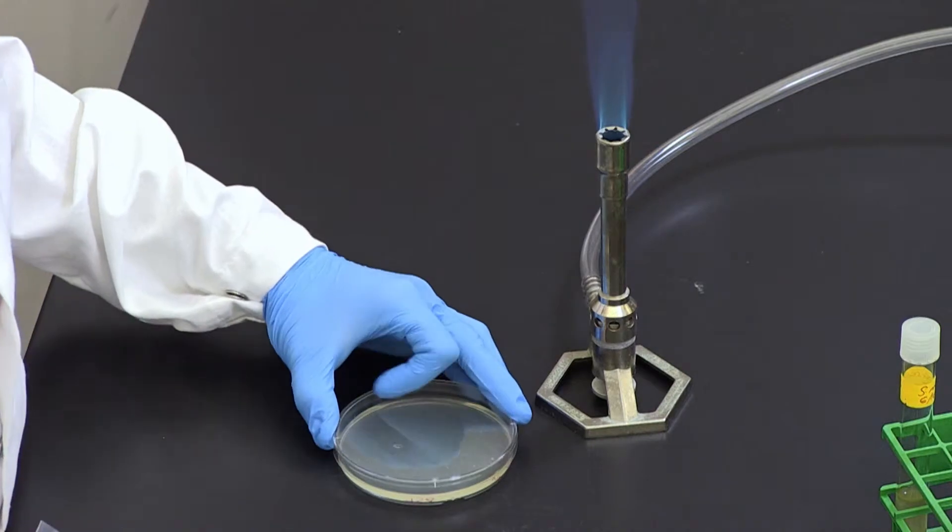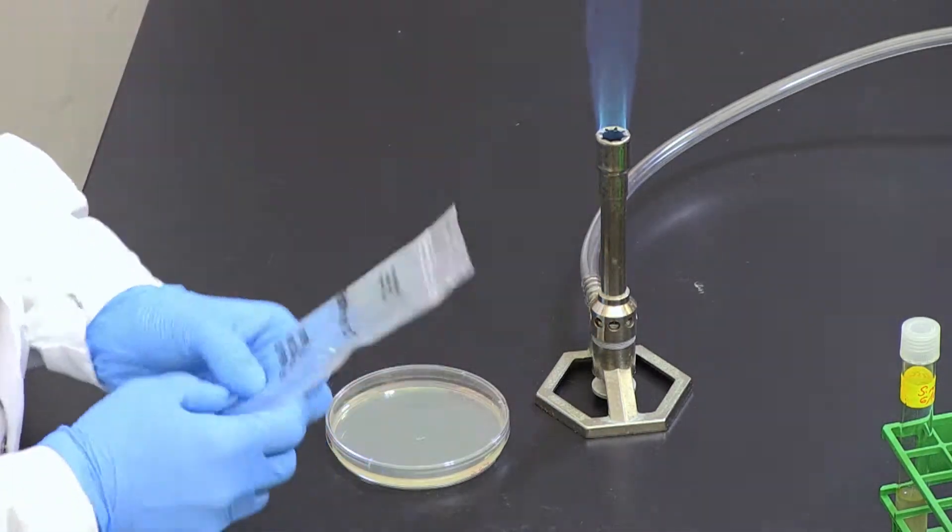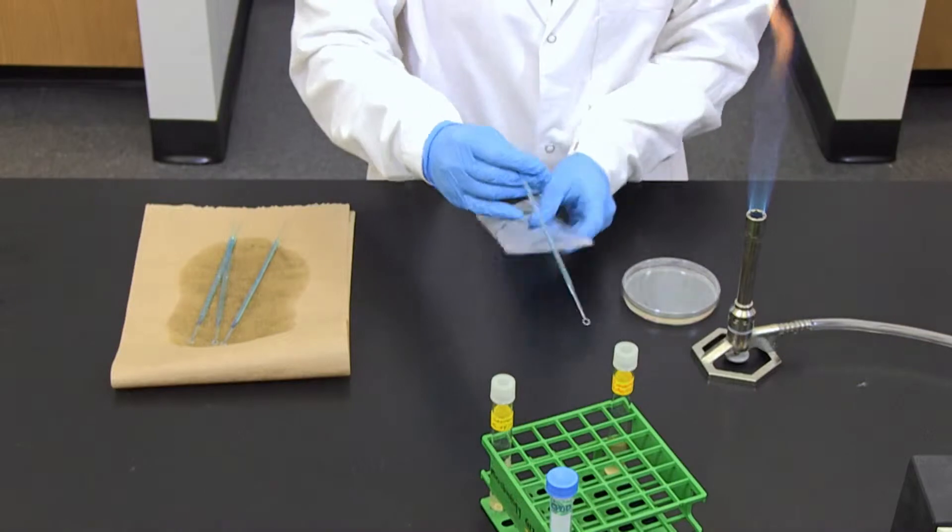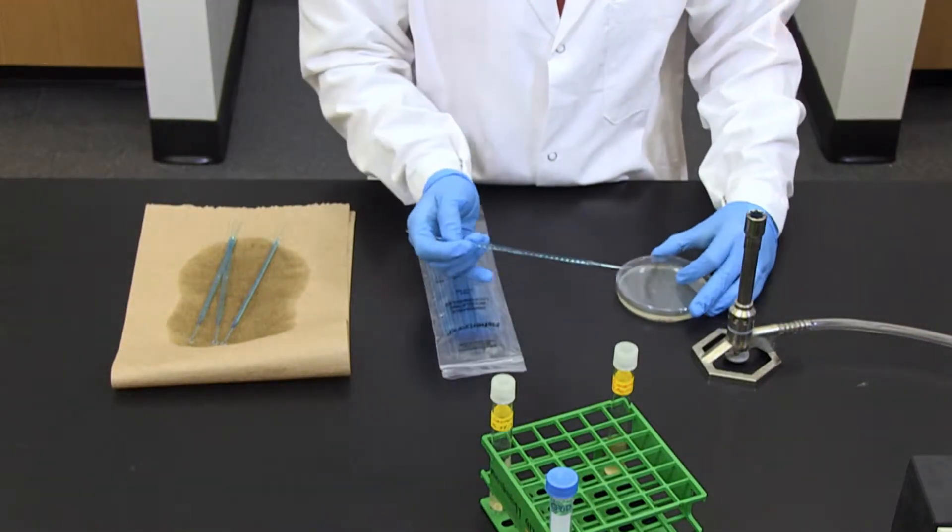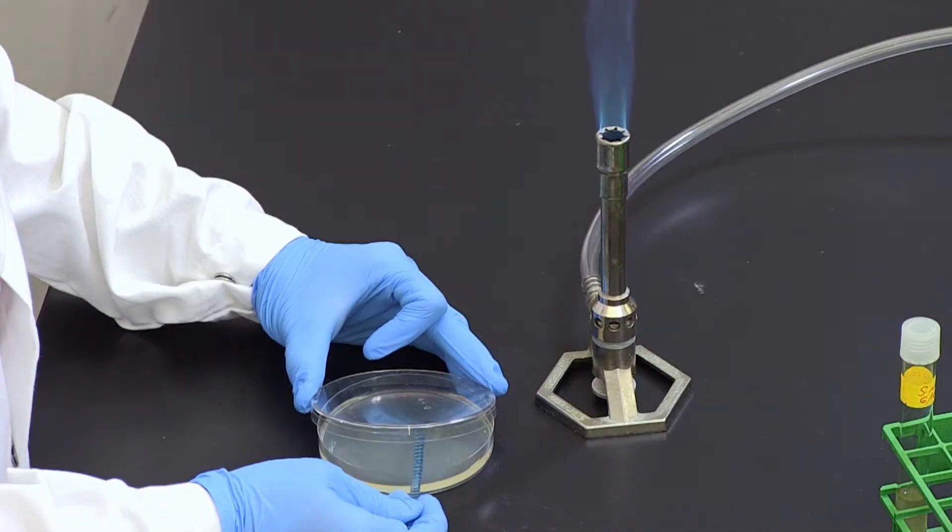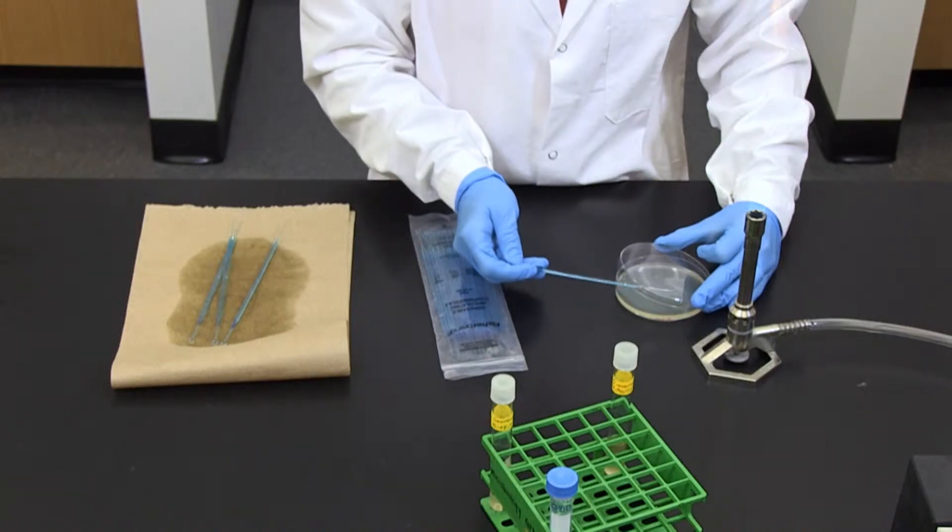Next, rotate the plate 90 degrees while keeping the plate closed, and streak area 3 several times back and forth with a sterile inoculating loop, hitting the second streak a few times.